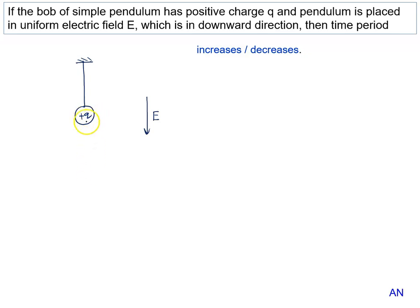First of all, let's draw the FBD of this pendulum. There will be Mg acting downward, and a positive charge always experiences force along the direction of the electric field.